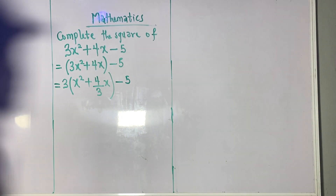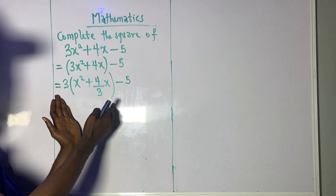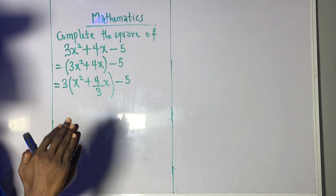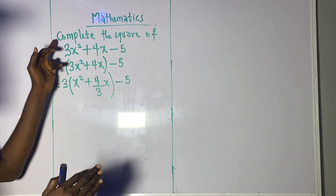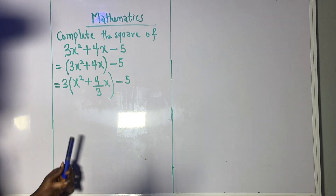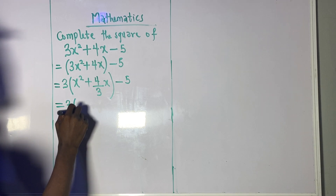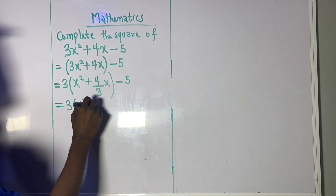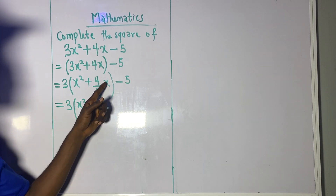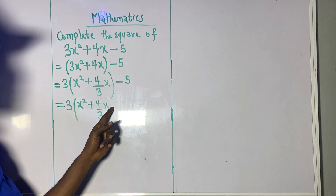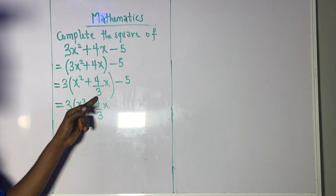It should be as if we have not changed the previous expression — as if we have not changed the question. So we still have minus 5 outside. The expression inside the bracket, x² + 4/3 x, is what we are going to write as a perfect square. From here we have: 3 brackets x² + 4/3 x.